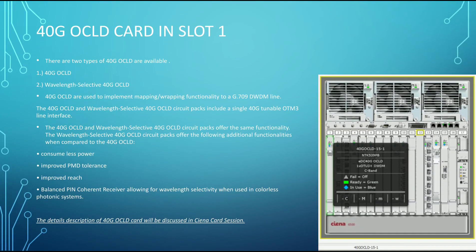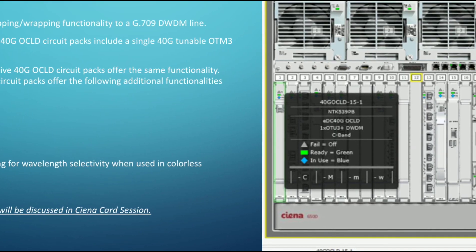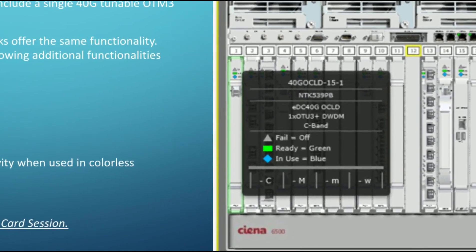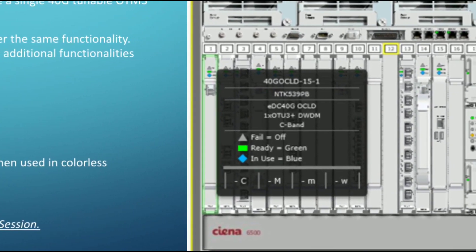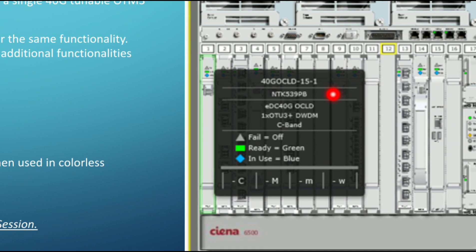Here we are seeing the 40G OCLD card in slot 1. This is the pack number of the OCLD card. The description is EDC 40G OCLD 1 into O2 3 plus DWDM, it's C-band. The LED indications on this card denote critical, major, minor, and warning alarms.